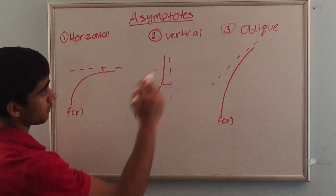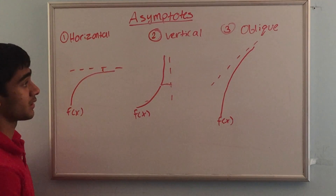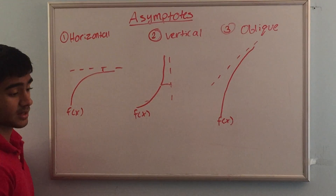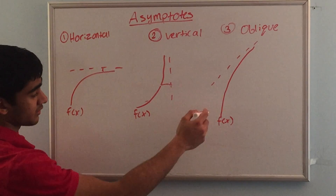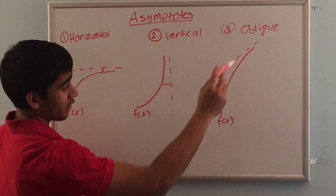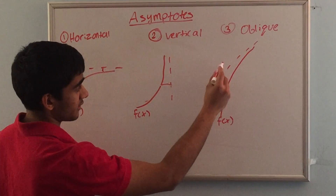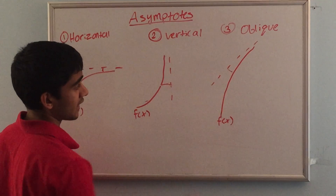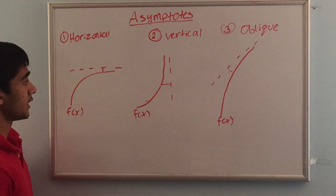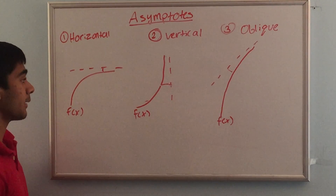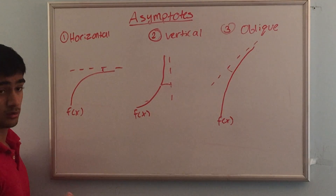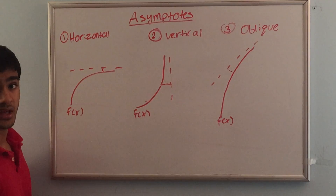The last one is the oblique asymptote and it's the exact same kind of concept, except the line is a combination of vertical and horizontal — like a normal function y equals x. The function approaches it and goes to infinity, and the distance between the function and the asymptote will become really close to zero but will never actually equal zero. The key idea to remember is that the function will never actually cross the asymptote.